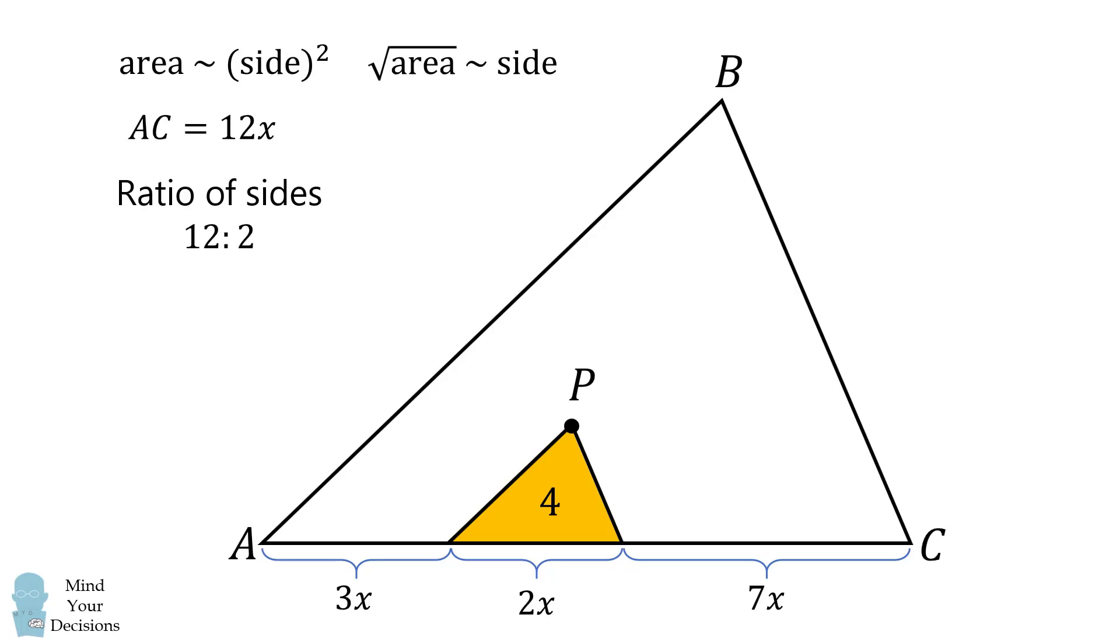The ratio of the sides between ABC and this yellow triangle will be 12 to 2, because it's 12x to 2x. This will simplify to be 6 to 1. Consequently, the ratio of their areas will be 6 squared to 1 squared, which works out to be 36 to 1.